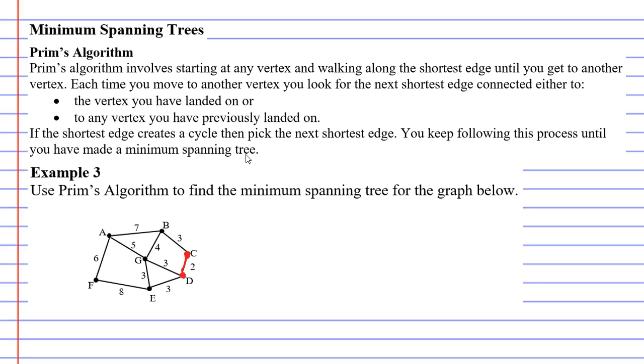What is the shortest edge connected to these vertices? Well, they're all connected to edges of length 3. So you can pick either one of them, doesn't matter which one you pick. I'm going to connect along to vertex G this time. Now we're focusing on three vertices, C, D, and G.